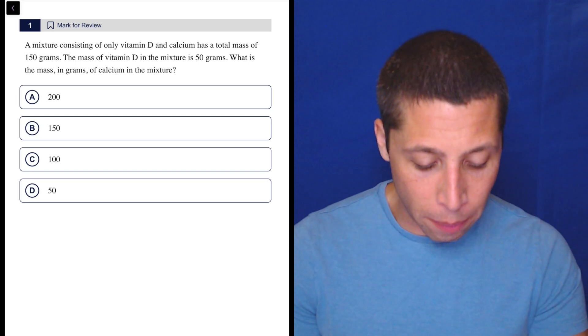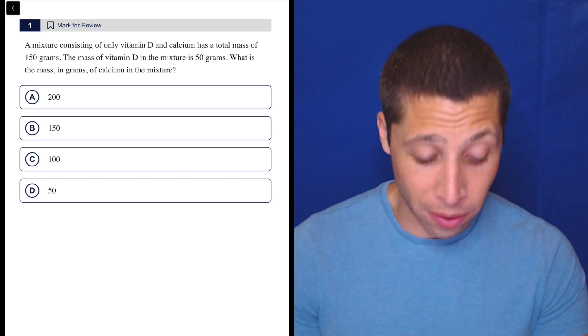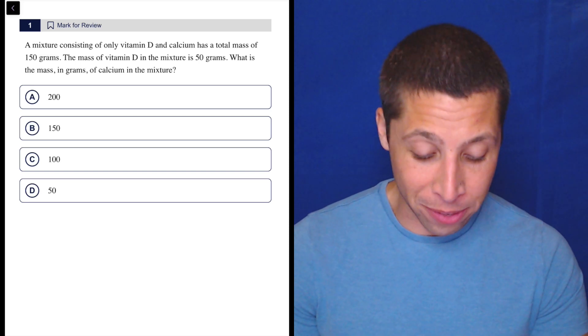A mixture consisting of only vitamin D and calcium has a total mass of 150 grams. The mass of vitamin D in the mixture is 50 grams. What is the mass in grams of calcium in the mixture?